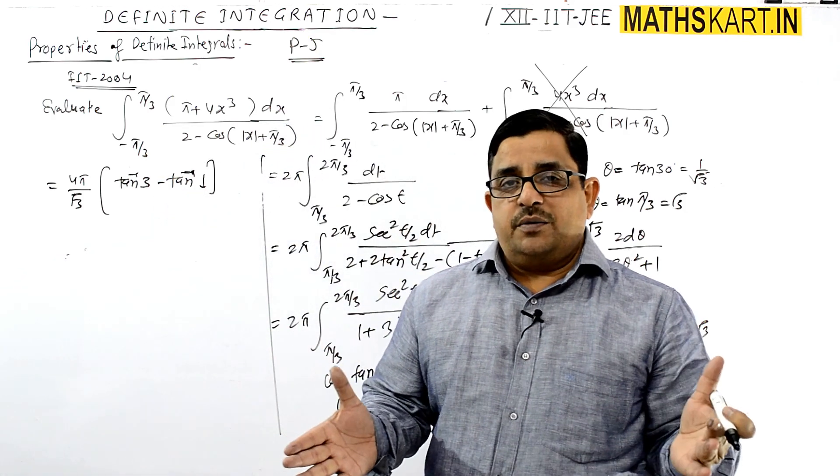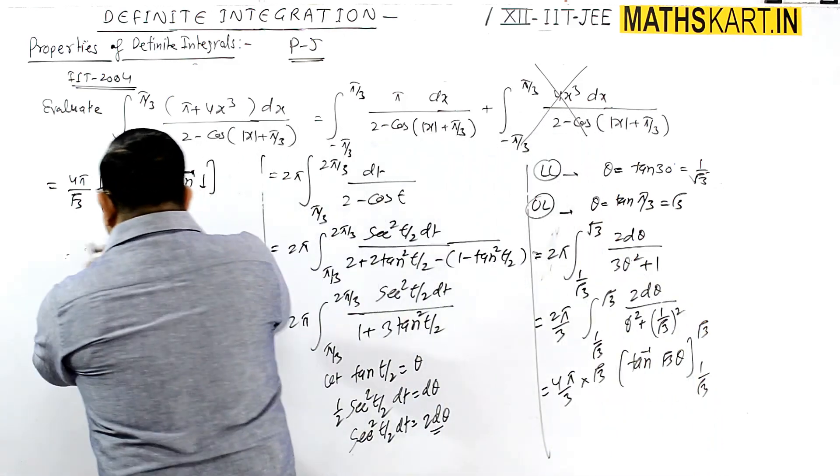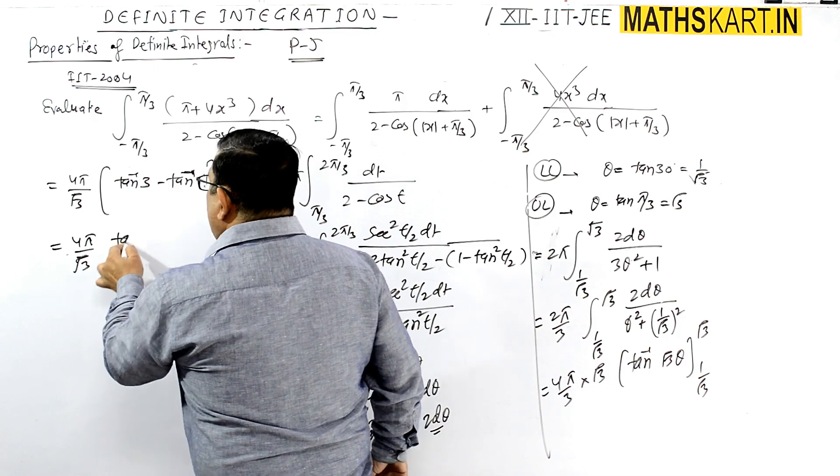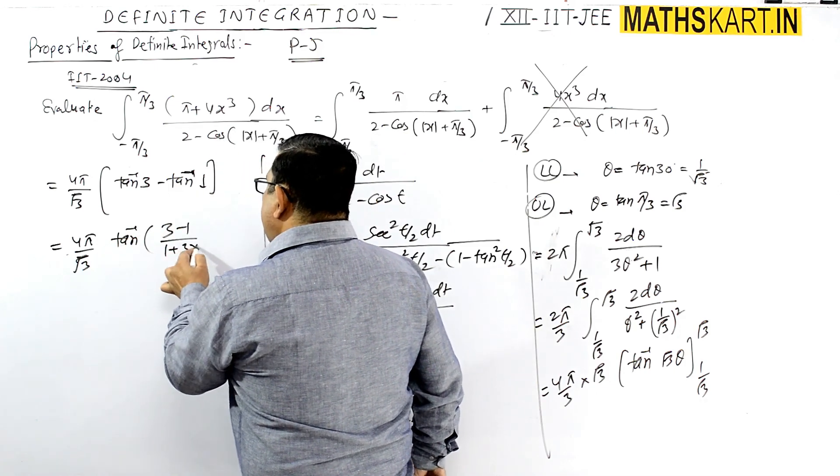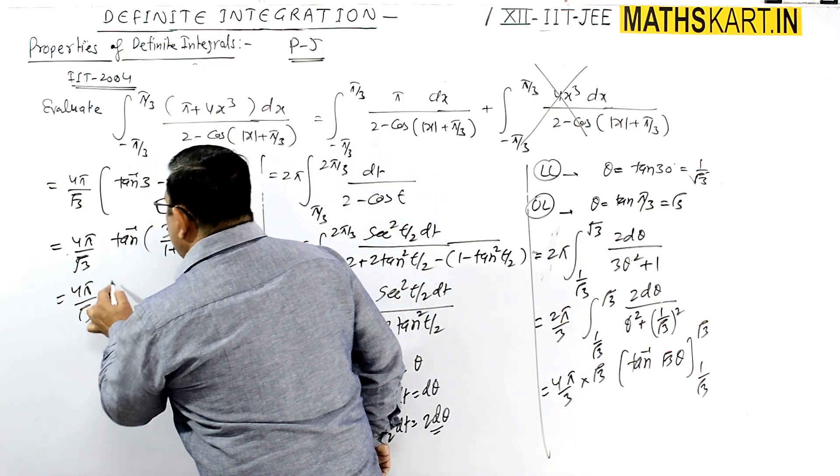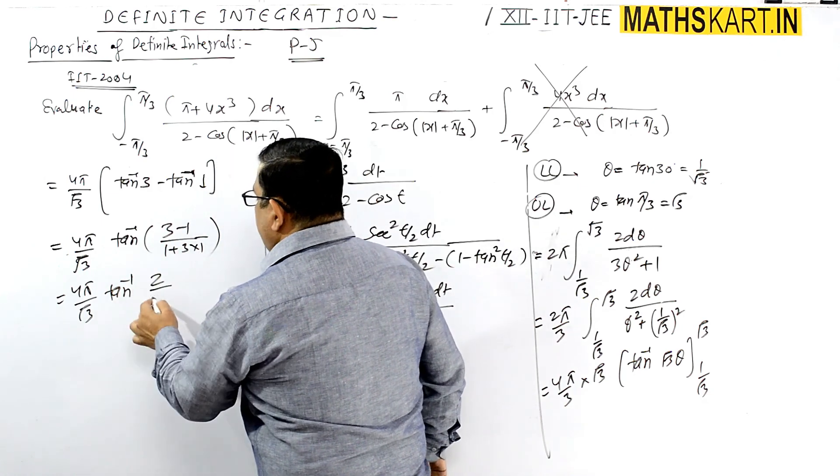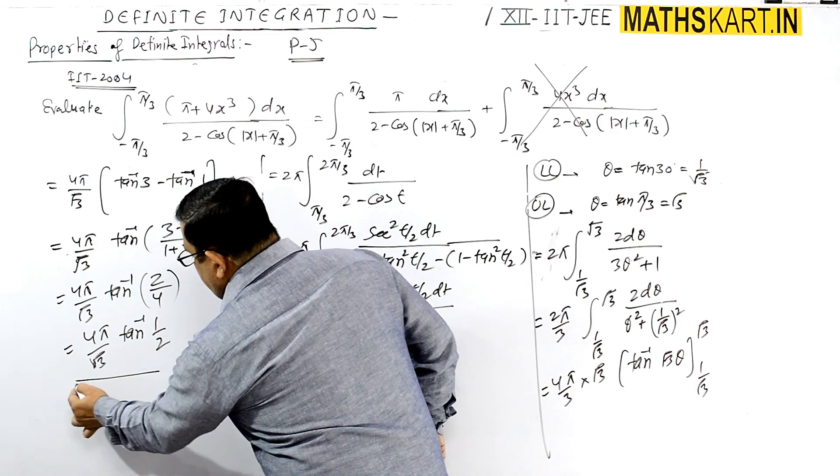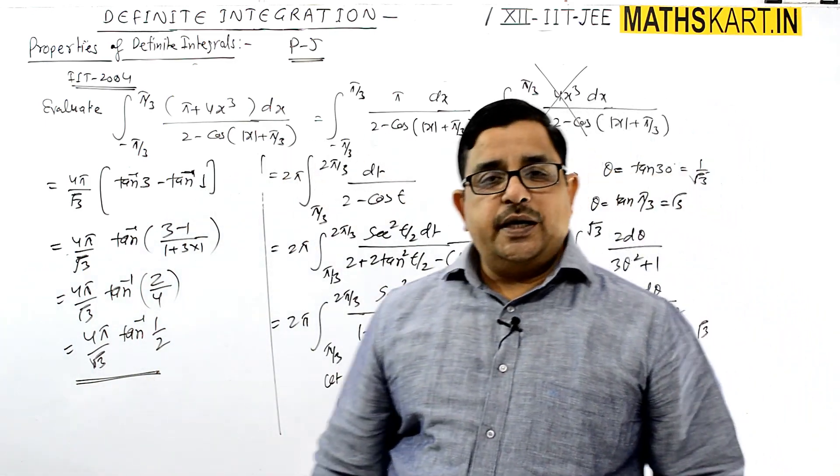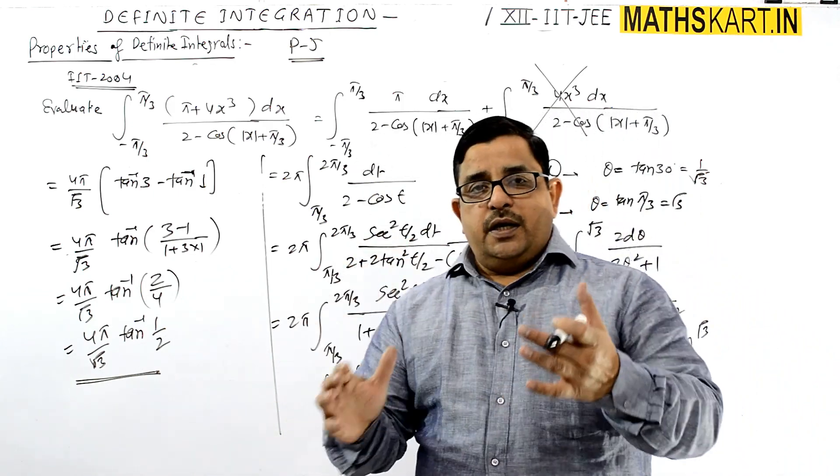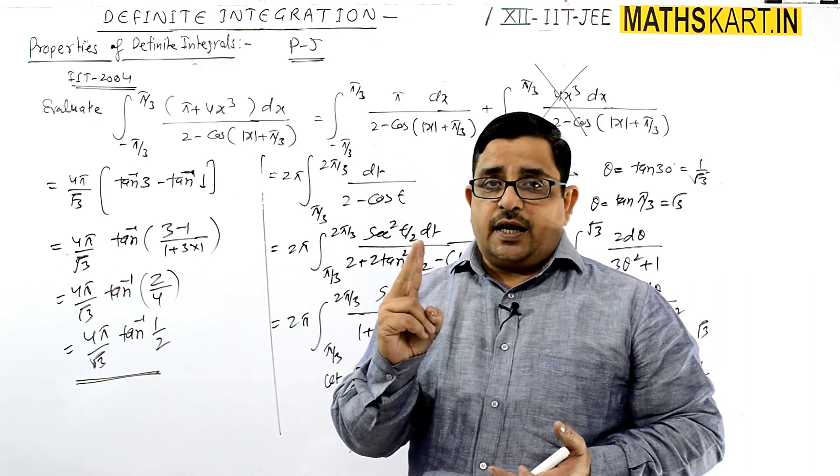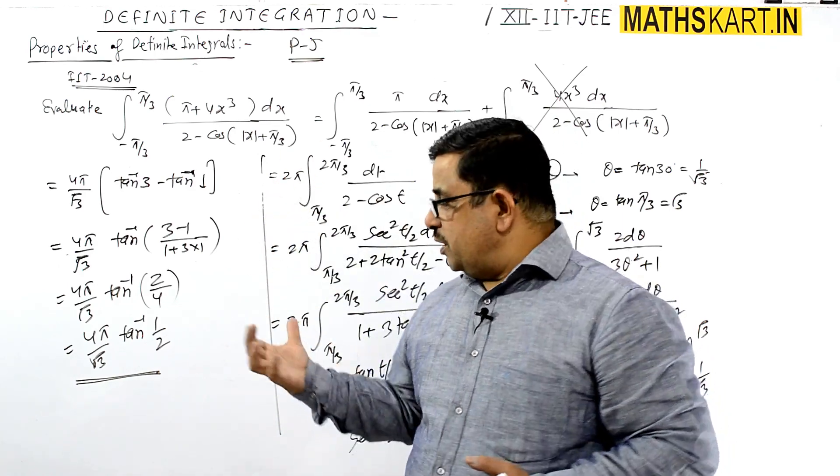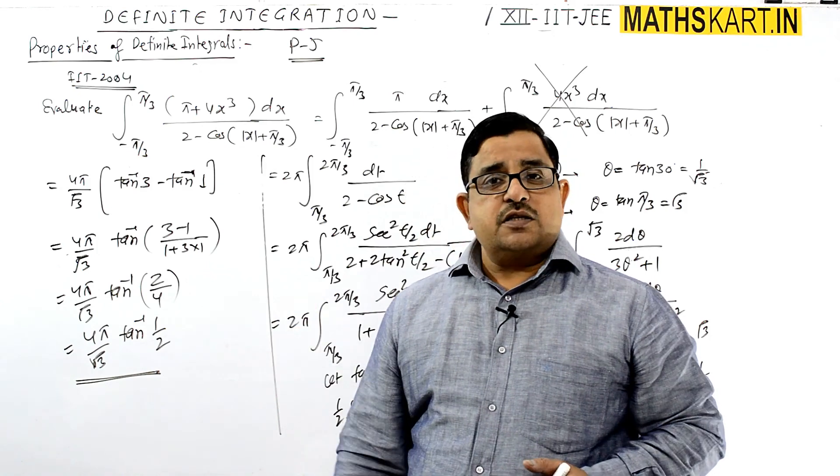Using the formula tan⁻¹(a) - tan⁻¹(b) = tan⁻¹((a-b)/(1+ab)): 4π/√3 times tan⁻¹((3-1)/(1+3·1)) = 4π/√3 times tan⁻¹(2/4) = 4π/√3 times tan⁻¹(1/2). This was a subjective question asked in IIT 2004. The final answer is 4π/√3 tan⁻¹(1/2).